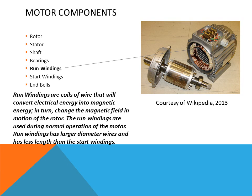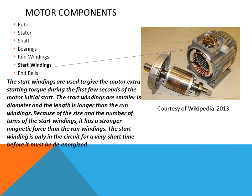The run windings are the main windings of a motor — they do the work while the motor is operating and have a strong magnetic field to keep the rotor in motion. The start windings are the secondary windings, used only for a very short time at the initial start of a motor. The start windings receive voltage only during startup, then come out of the circuit. If they did not come out, the motor would overheat and trip on thermal overload. The start windings have more turns than the run windings, giving them an extremely high magnetic field to get the rotor moving.